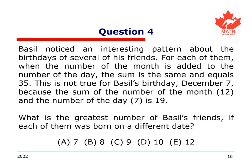In this fourth question, we are asked to consider Basil, who noticed an interesting pattern about the birthdays of several of his friends. For each of them, when the number of the month is added to the number of the day, the sum is the same and equals 35. This is not true for Basil's birthday, December 7th, because the sum of the number of the month, 12, and the number of the day, 7, is 19.